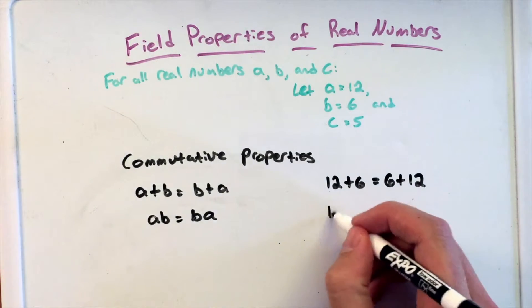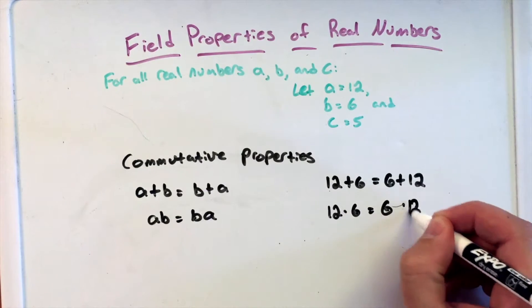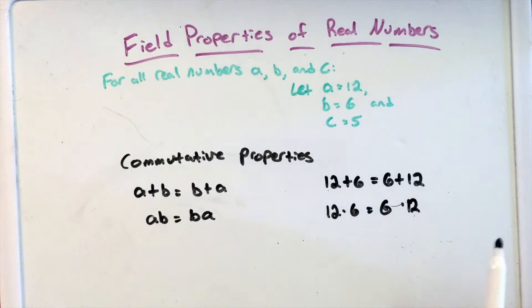And the same thing with multiplication, 12 times 6 is equal to 6 times 12. It doesn't matter which way you order or you multiply, 6 times 12 is the same thing as 12 times 6, and 12 plus 6 is the same thing as 6 plus 12.